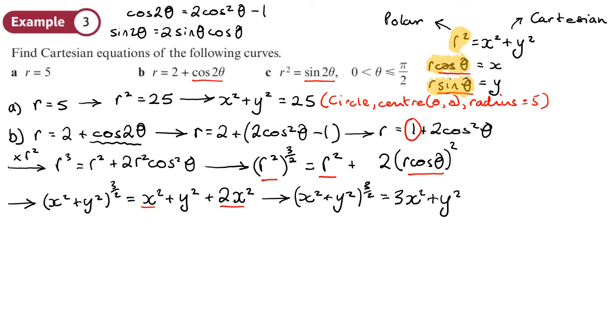Substituting gives (x² + y²)^(3/2) = (x² + y²) + 2x². Collecting x² terms: (x² + y²)^(3/2) = 3x² + y². That's the method — get everything in terms of r², r cosθ, or r sinθ so you can substitute.